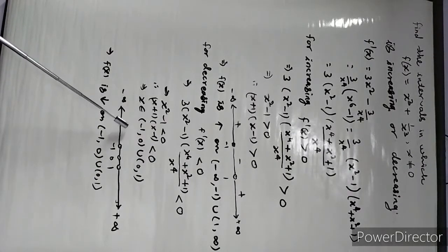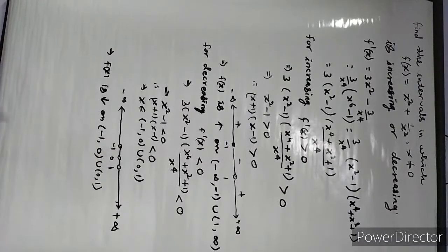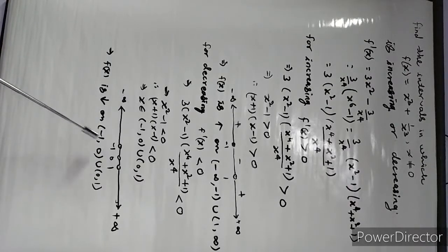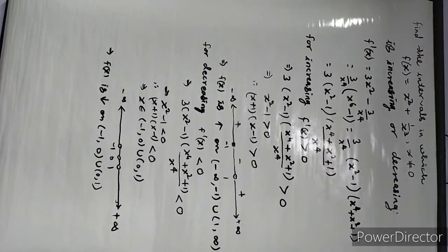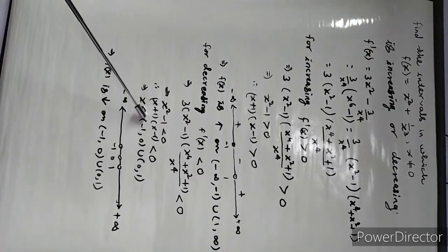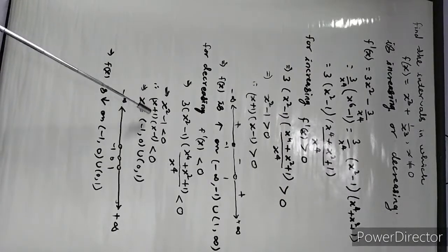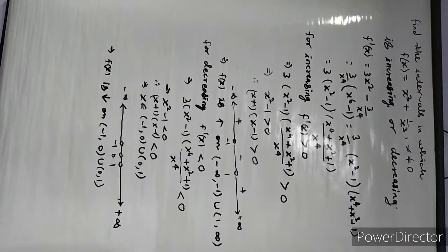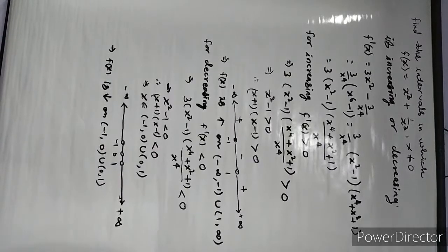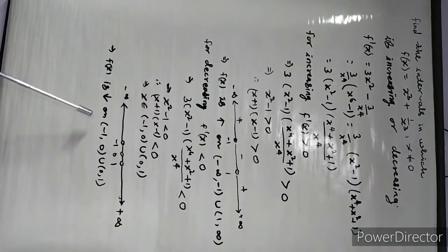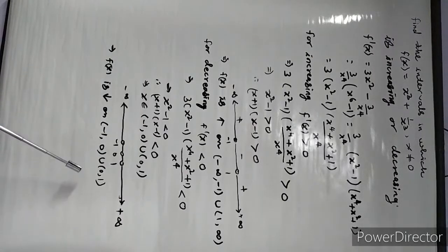So x belongs to (-1, 0) ∪ (0, 1), since x ≠ 0. Between -1 and 0, taking x = -1/2: (-1/2 + 1)(-1/2 - 1) gives negative, so decreasing on (-1, 0). Similarly in (0, 1), putting x = 1/2: (1/2 + 1)(1/2 - 1) again gives negative. So in both (-1, 0) and (0, 1) the function is decreasing. Therefore f(x) is decreasing on (-1, 0) ∪ (0, 1).